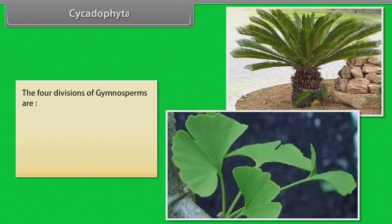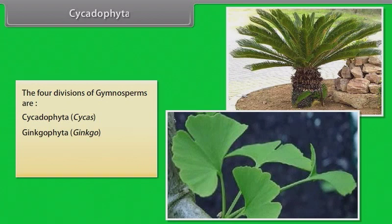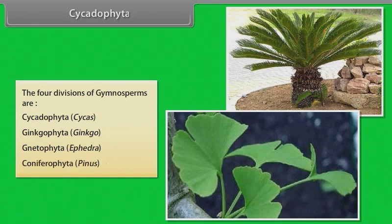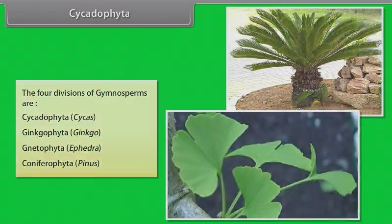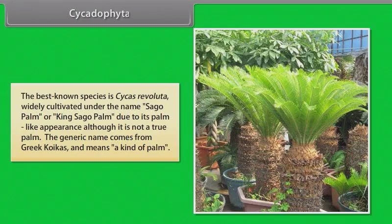The four divisions of Gymnosperms are Cycadophyta including Cycas, Ginkgophyta including Ginkgo, Gnetophyta including Ephedra, and Coniferophyta including Pinus. The best known species is Cycas revoluta, widely cultivated under the name Sago palm or King Sago palm due to its palm-like appearance, although it is not a true palm. The generic name comes from Greek Koicus and means a kind of palm.